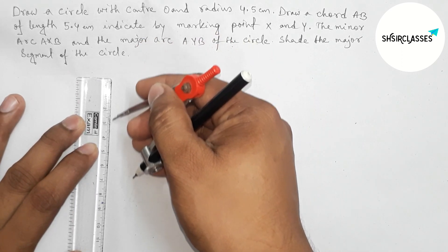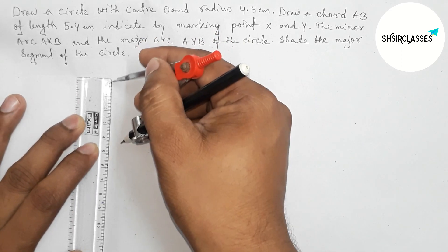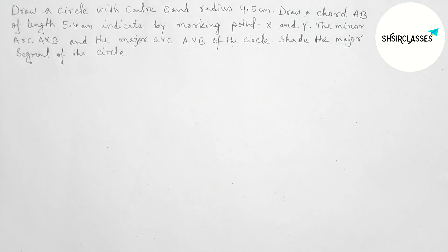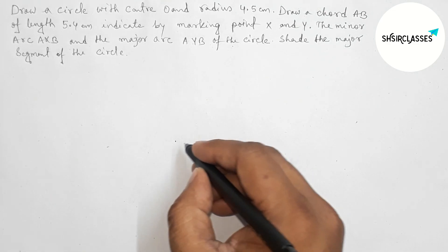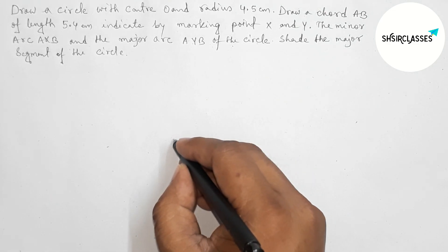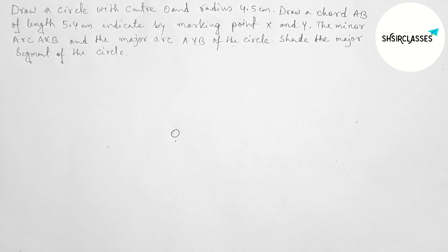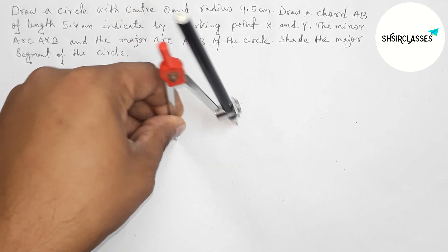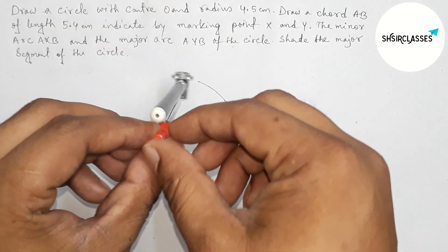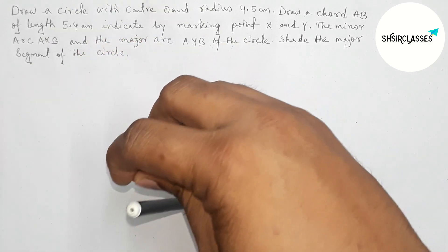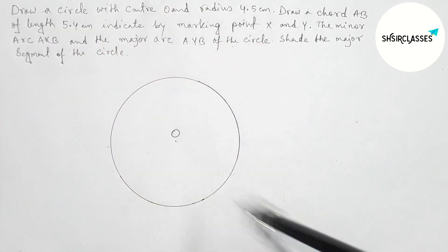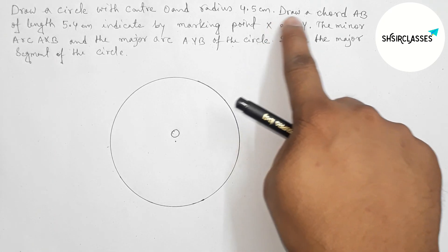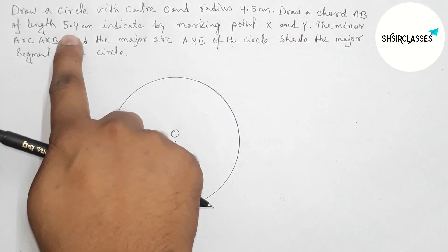First of all, taking the radius 4.5 centimeters with the help of compass and scale. So here this is 4.5 centimeters. Now taking center O, and with the help of radius 4.5, now drawing a circle.